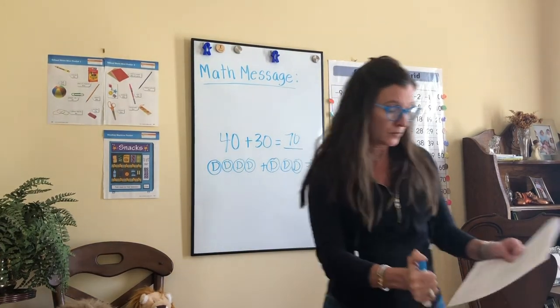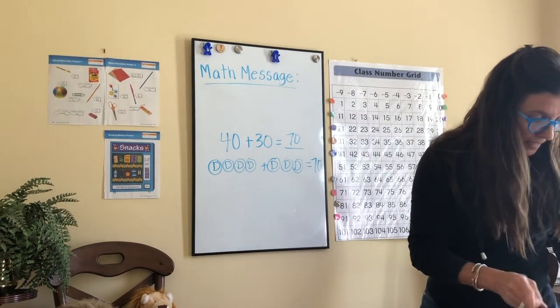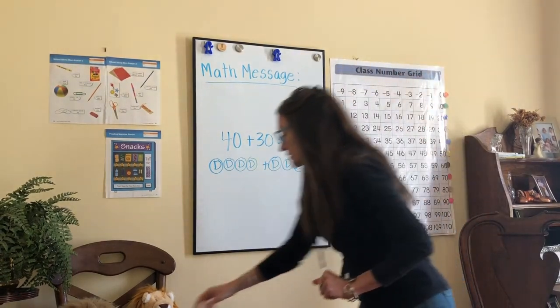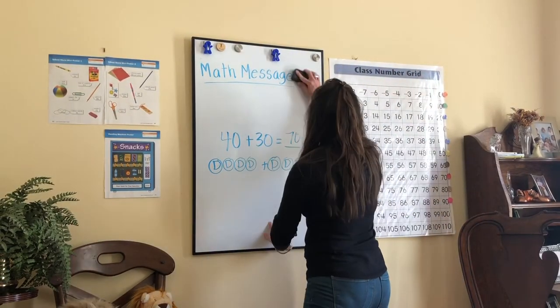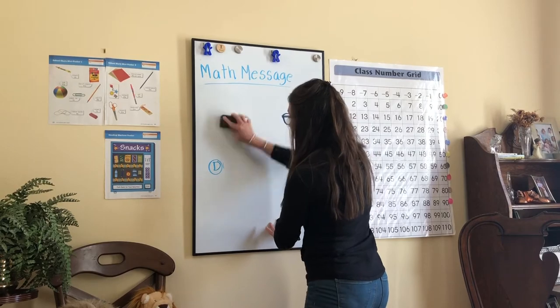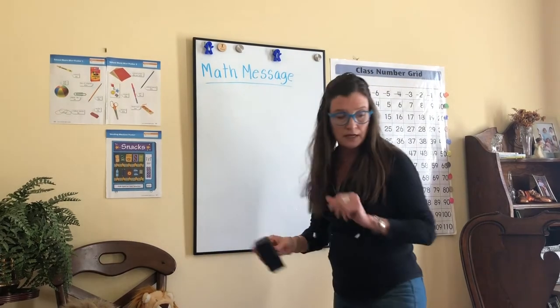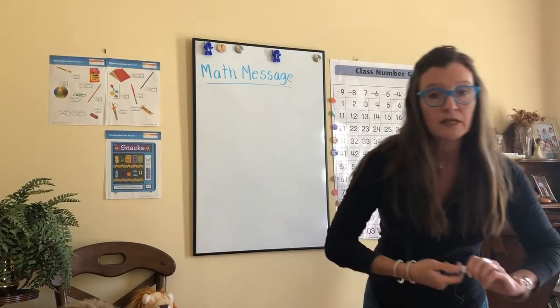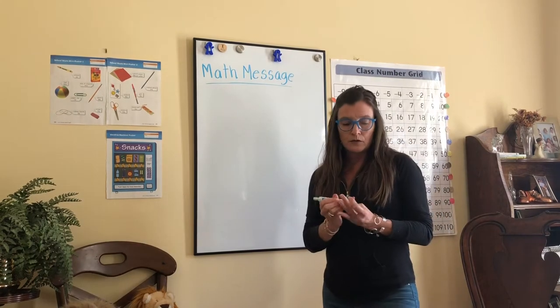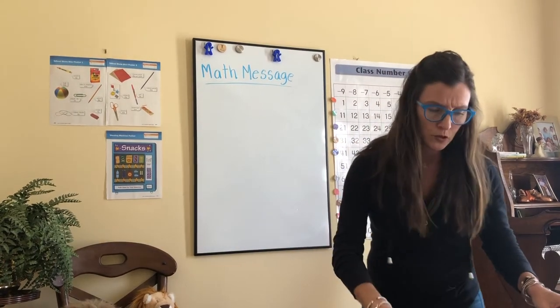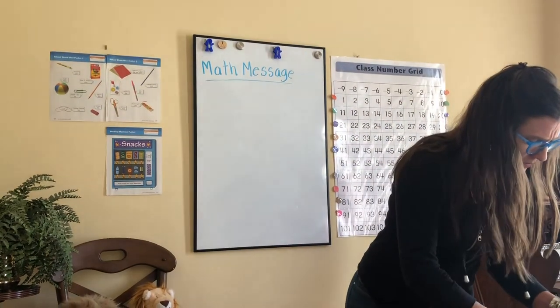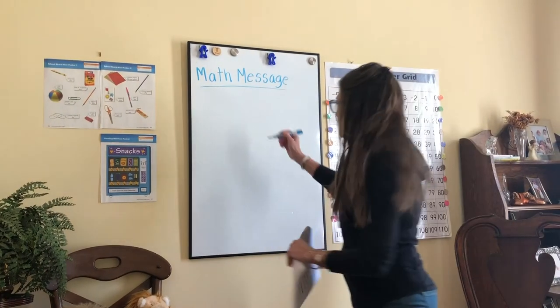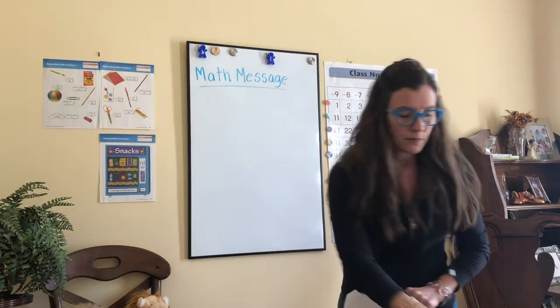All right, last thing we're going to talk about is a name collection box. And I realize you're getting our video a little bit later today than usual. That's okay. You may have noticed the name collection box was a little bit different today on your journal page. I think it was 202. Let's see, 202. So I'm going to give you an example. Let's erase the math message, we're done with that. That might confuse me.